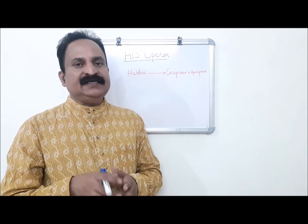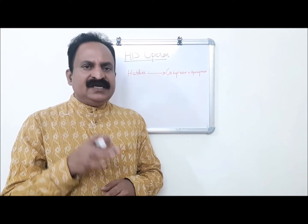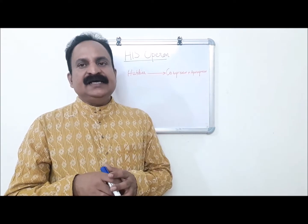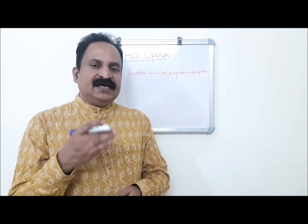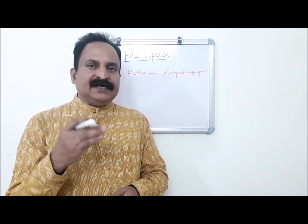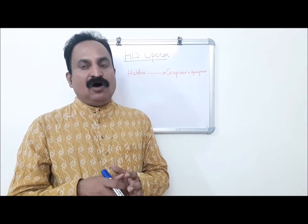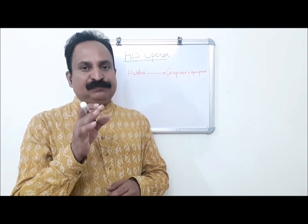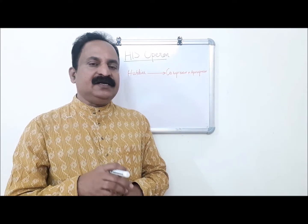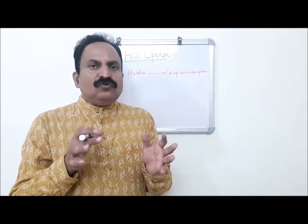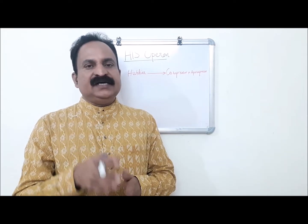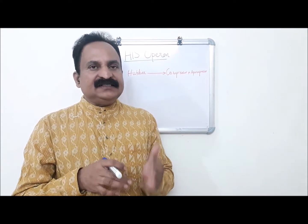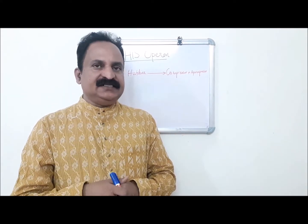This is called the His operon or Histidine operon. In both species, transcription produces a single polycistronic mRNA about 7300 nucleotides long, extending from a primary promoter, Hisp1, to a Rho-independent terminator. The two weak terminal promoters, Hisp2 and Hisp3, are located within the HisC and HisF genes, respectively.